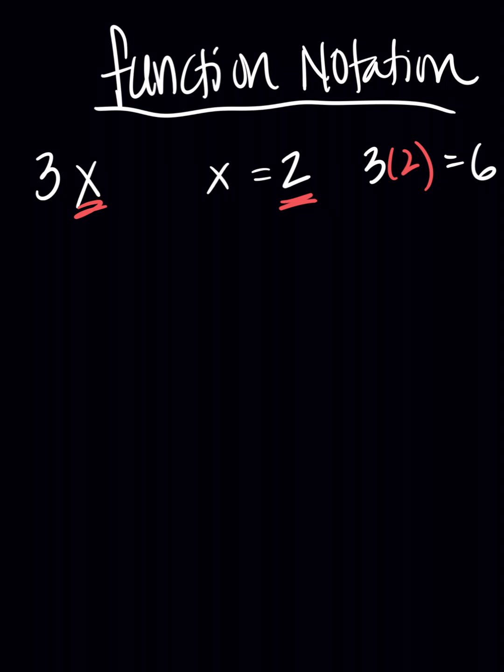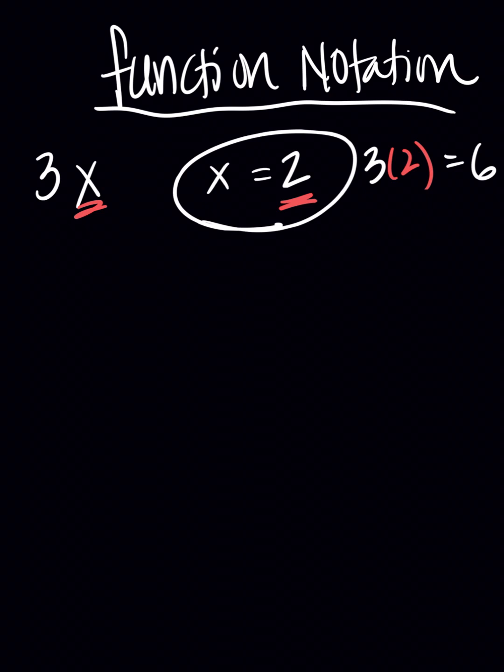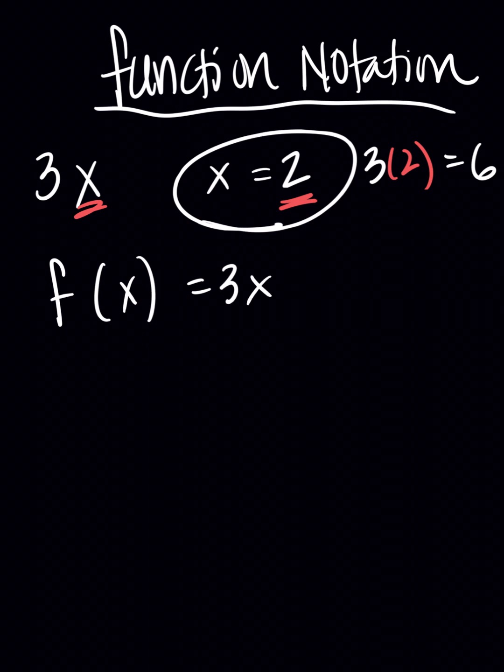So then you would have 3 times 2 and that would equal 6. Well, function notation is just a fancy way of saying plug in 2 for x. Function notation is written like this. So the same problem could be written as f of x equals 3x.